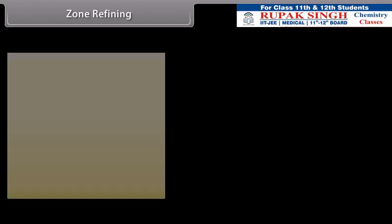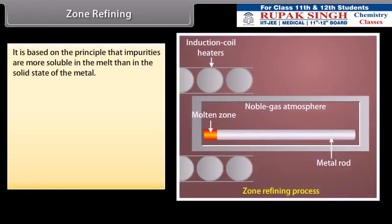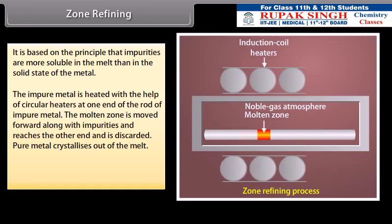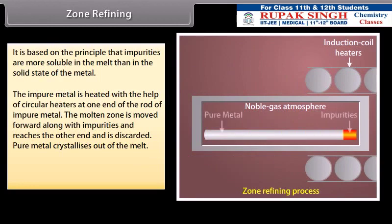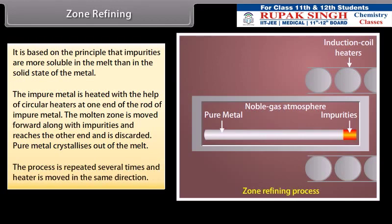Zone refining. It is based on the principle that impurities are more soluble in the melt than in the solid state of the metal. The impure metal is heated with the help of circular heaters at one end of the rod of impure metal. The molten zone is moved forward along with impurities and reaches the other end and is discarded. Pure metal crystallizes out of the melt. The process is repeated several times and heater is moved in the same direction. For example, it is used for purifying semiconductors.